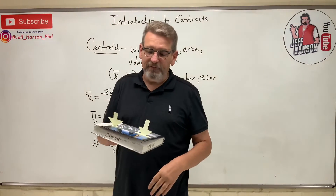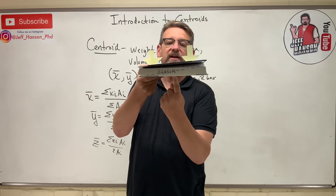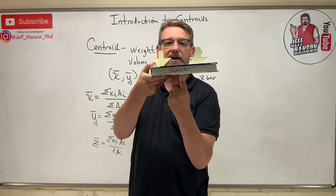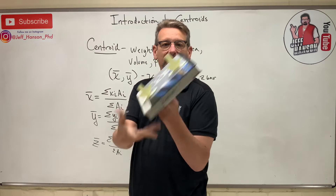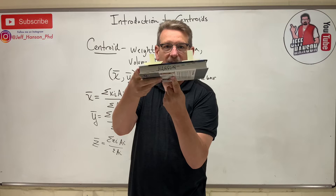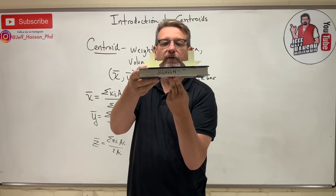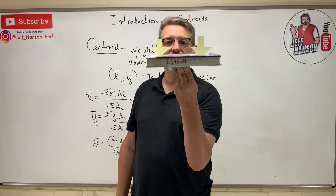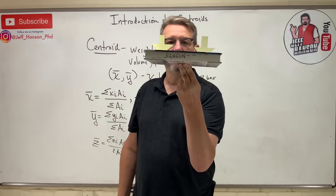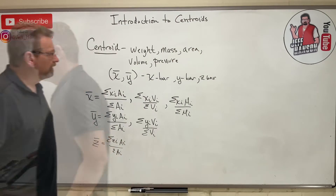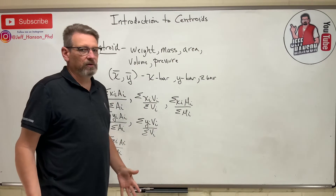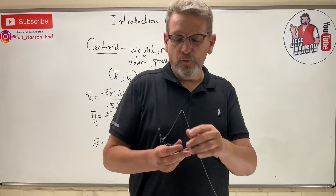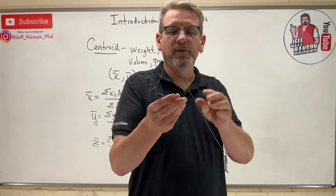So if I know where the centroid is, I should be able to put my finger at that location and balance the object on my finger. Let me use two fingers — my finger is at the centroid of that book, and it balances.